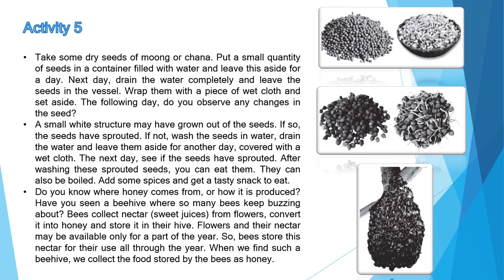Activity 5 में कुछ dry seeds लेने हैं — मूंग या चने के। Seeds को container में लेकर पानी डालना है और एक दिन के लिए रखना है। Next day पूरा water निकाल देना है और seeds को गीले कपड़े में wrap करके एक दिन के लिए रखना है। Next day seeds में से white color के structures दिखेंगे — इसका मतलब seeds sprout हो गए। Sprouted seeds को wash करके, boil करके और spices add करके tasty snack बना सकते हैं।